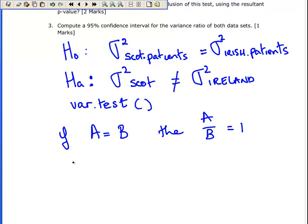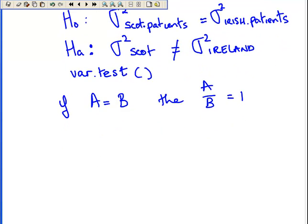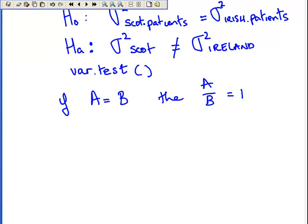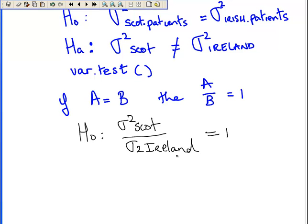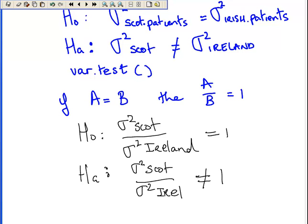The null hypothesis essentially can be written as H0: variance for Scotland divided by variance for Ireland is equal to 1. That's the variance ratio formulation for testing variance.